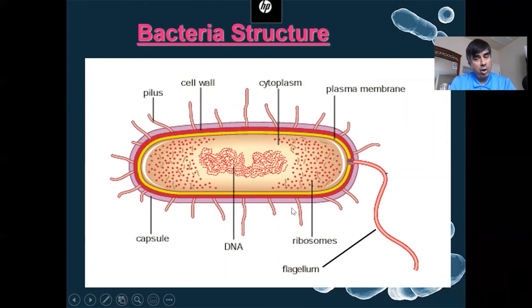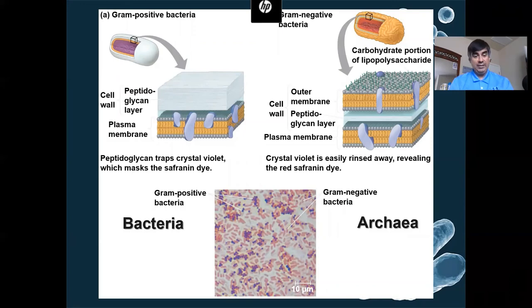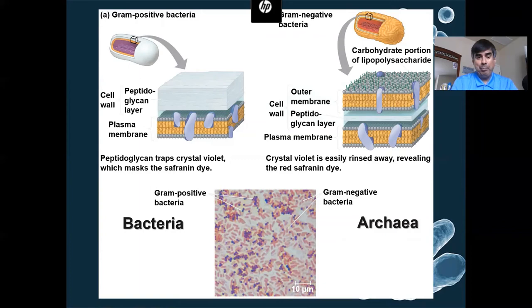Bacteria also have other hair-like structures called pili, used for bacterial sex, which we'll talk about. Not all bacteria have pili. When it comes to bacteria structure, remember there are two kingdoms: kingdom Bacteria, sometimes called Eubacteria, and kingdom Archaea. The difference between these two kingdoms depends on whether they are gram-positive or gram-negative bacteria. Gram-positive makes up most typical bacteria, like E. coli.